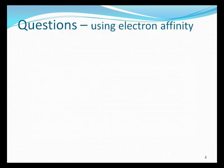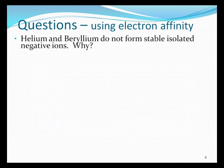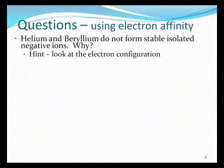A few questions. We can answer these using electron affinity. Helium and beryllium do not form stable, isolated negative ions. Well, why not? The hint, of course, is with all this periodicity, to look at the electron configuration.